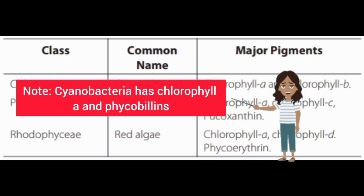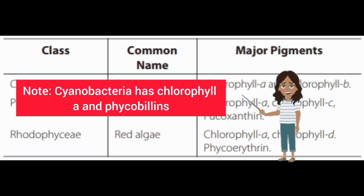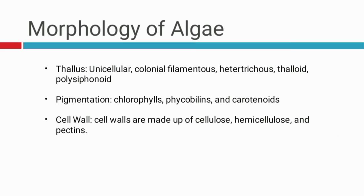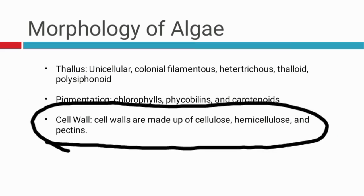Cyanobacteria, although it's a bacteria, can also sometimes be considered as an algae. It has chlorophyll A and phycobilins. Take note of all of these. For the cell wall, the cell walls of algae are made up of cellulose, hemicellulose, and pectins.